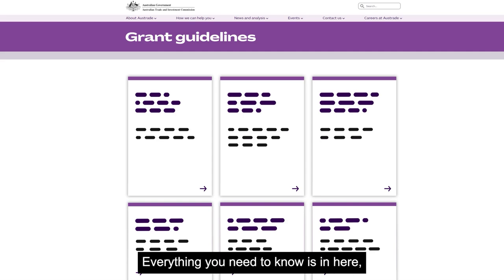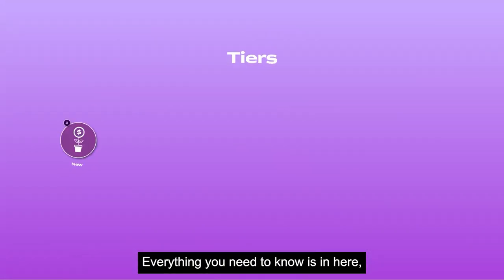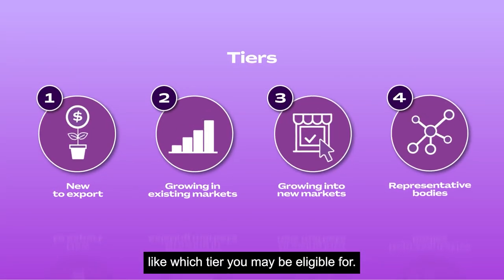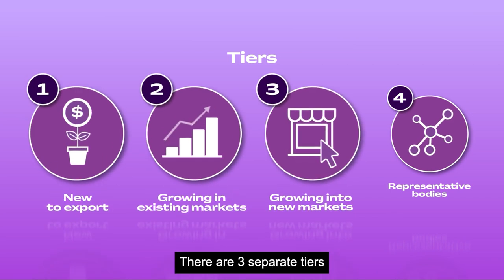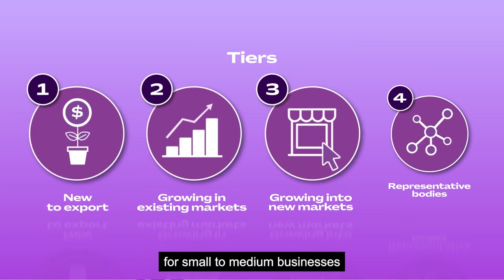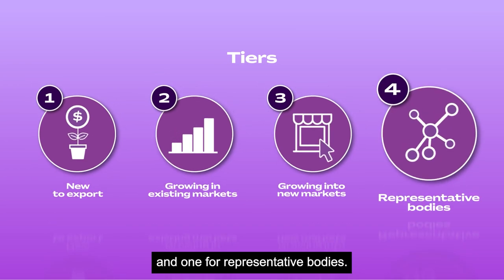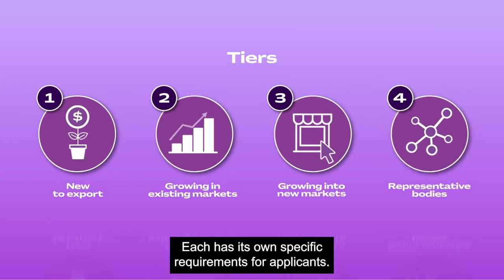Everything you need to know is in here, like which tier you may be eligible for. There are three separate tiers for small to medium businesses and one for representative bodies. Each has its own specific requirements for applicants.